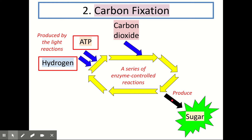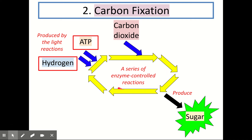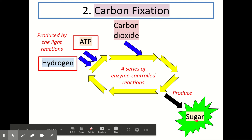Moving on to stage 2. Stage 2 looks quite different from stage 1 in that it is a cycle. Carbon fixation involves a series of enzyme-controlled reactions — multiple reactions within this cycle. You don't need to know at National 5 level what these are, but you need to know there's a series of them and they are all enzyme-controlled. ATP and hydrogen — produced in stage 1 — are both used here. Carbon dioxide is also used in this stage, taken from the air. When hydrogen, ATP, and carbon dioxide are combined through a series of enzyme-controlled reactions, they produce sugar. It's really important that you use the word sugar here, not glucose.